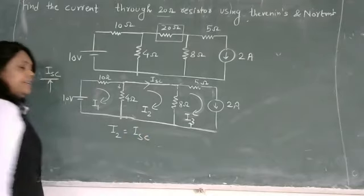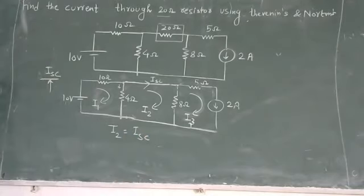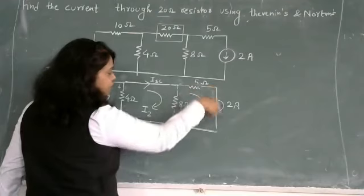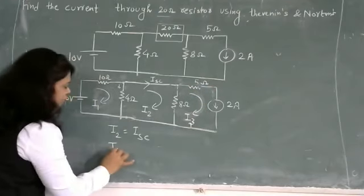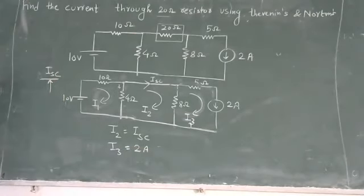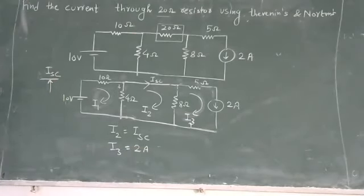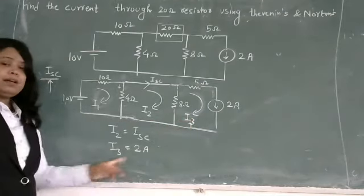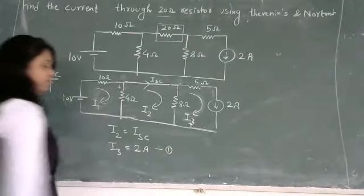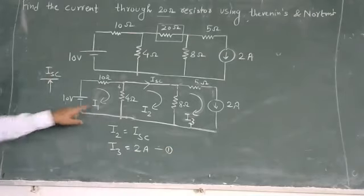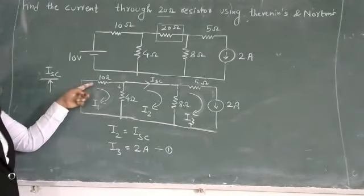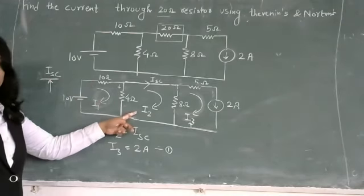Then everything comes when i3. We have 2 amps here. Now we write the mesh equation for i1. Minus 10, so minus 10 plus 10i1 plus 4i1 minus i2.